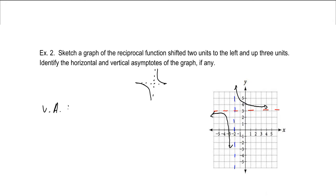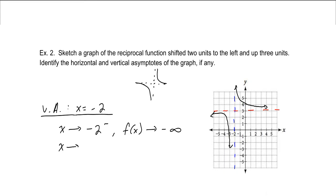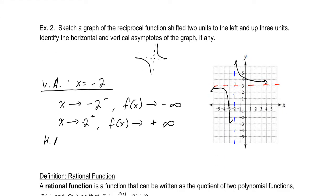For our vertical asymptote, the local behavior is at x equals negative two. As x approaches negative two from the left, f of x approaches negative infinity. As x approaches negative two from the right, f of x approaches positive infinity. We have our horizontal asymptote at y equals three, obtained by shifting up three, so as x approaches plus or minus infinity, f of x approaches three.